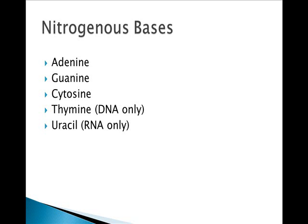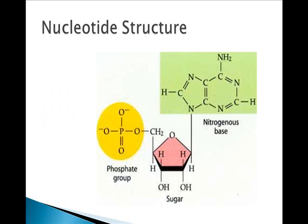The only two bases that differ between DNA and RNA are thymine and uracil. You do need to know the different nucleotide structures. The primary one to remember has a phosphate group attached to a five-carbon sugar — either ribose or deoxyribose — and a nitrogenous base with either one or two rings, depending on whether it's a purine or pyrimidine. You don't need to know purine and pyrimidine, so don't worry about that.